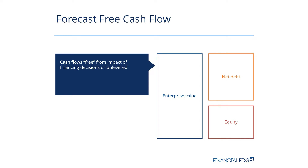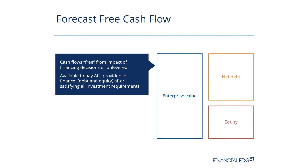Another way to look at free cash flows is the cash flow available to pay all providers of finance — debt and equity — after satisfying all investment requirements. By investment requirements, we mean things like buying property, plant and equipment, so capital expenditure, and investing in inventory, those kind of things. So it's the cash that's available after buying all those things that could be returned to your debt holders as interest or debt repayments, or to shareholders as dividends.